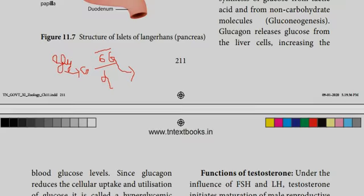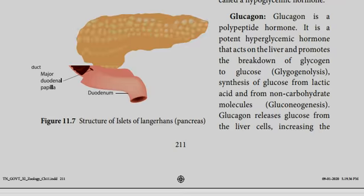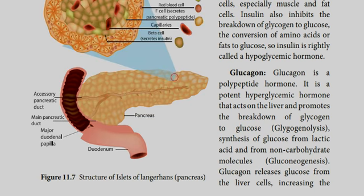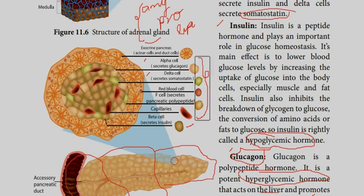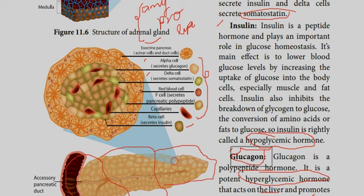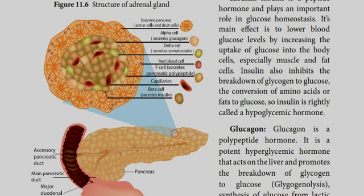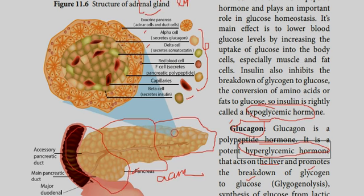Glucagon is the hyperglycemic hormone. It is stored in the liver. When blood glucose decreases — that is hypoglycemia — glucagon acts on the liver, converting glycogen to glucose, which increases the blood glucose level.